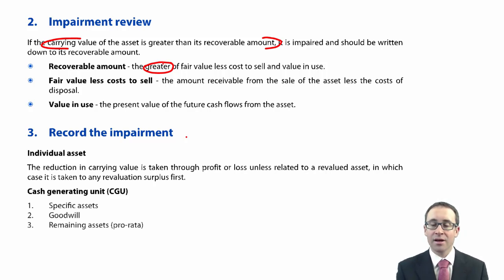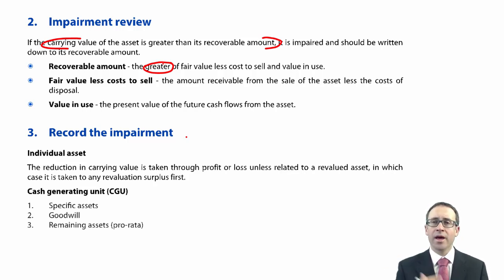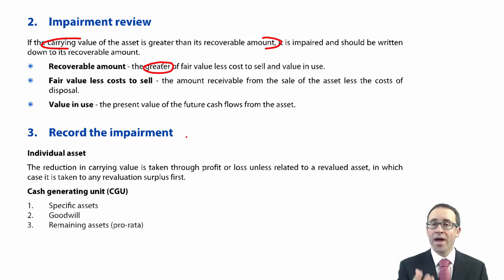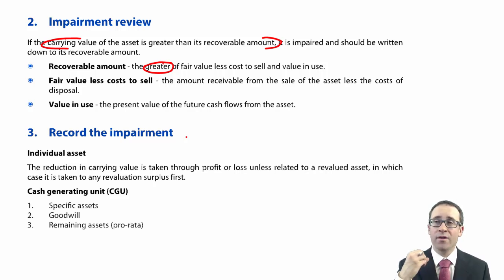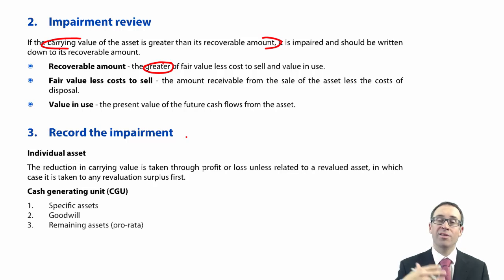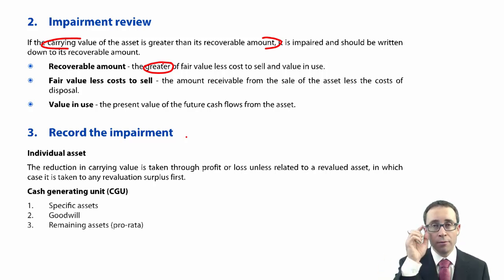You could be asked to calculate those figures or to discuss, explain, and apply them within a given scenario. Directors do not want to impair assets, so there is potential for them to be unethical by claiming they can't calculate a figure or don't have the information to do so, and therefore no impairment review is needed. However, whether you're looking at a subsidiary or associate, you will be able to get access to that data — you can work out the fair value, estimate cost to sell, and calculate the value in use using cash flow data and an appropriate discount rate.